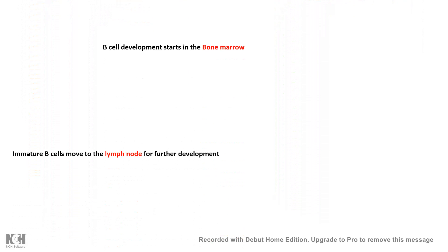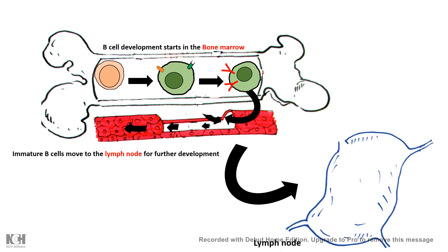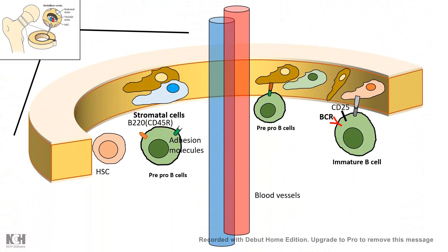B cell development starts in the bone marrow. After development, it moves to the lymph node where it matures and learns to encounter pathogens. Inside the bone marrow, there are vascular and endosteal niches where several B cell stages can be found. Let's look at which stage VDJ recombination takes place.